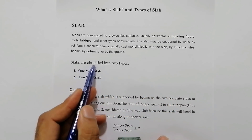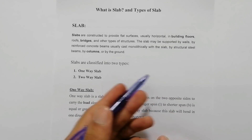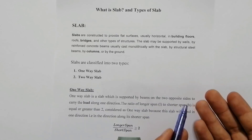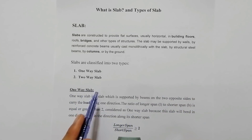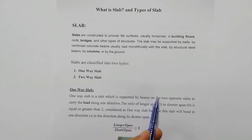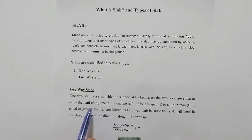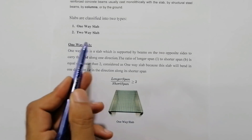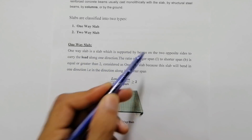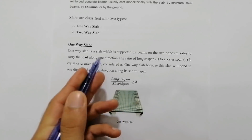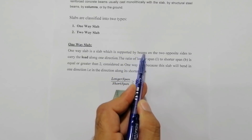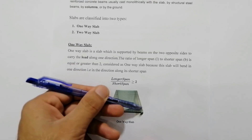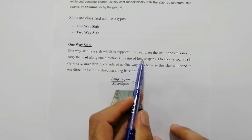Now, types of slabs. Slabs are classified into two types. The first one is one-way slab and the second one is two-way slab. A one-way slab is a slab which is supported by beams on two opposite sides to carry the load along one direction. You can see here in this picture — these are the beams on two opposite sides.